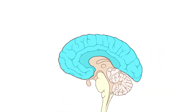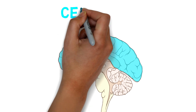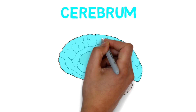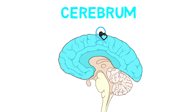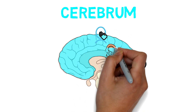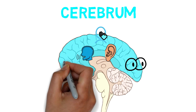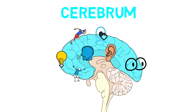If we move further up, we reach the cerebrum, which is responsible for the integration of complex sensory and neural functions. It contains billions of neurons and is responsible for performing higher functions like interpreting touch, interpreting vision, interpreting your hearing, as well as speech, emotions, thinking, control of movement and even consciousness.